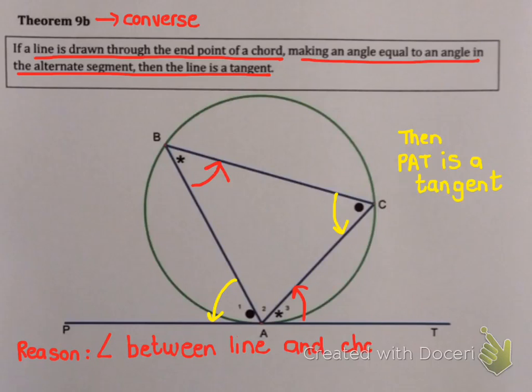But to be honest, 9b is the most common way to prove something is a tangent. And the reason we are going to use if we need to do this is because angle between line and chord. Or that's quite hard to remember. So fortunately they also accept converse of tan chord theorem. Which I find easier to remember.